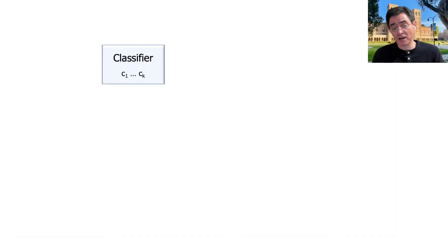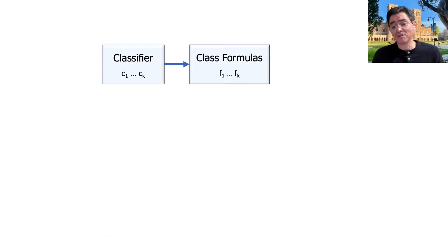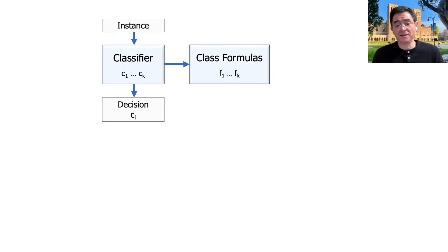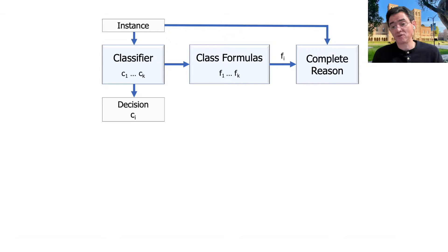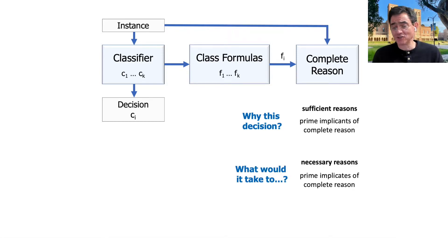Let's look at the big picture to highlight what's new in this work. We have the classifier; to do these computations we first compute what we call class formulas — one per class — which characterize the instances in each class. Then, given an instance and a decision, you take the corresponding class formula and compute the complete reason. From there you can answer: why did you make this decision, or what would it take to change it? This picture, except for the necessary reasons computed in this particular way, has been around before. So what's new?